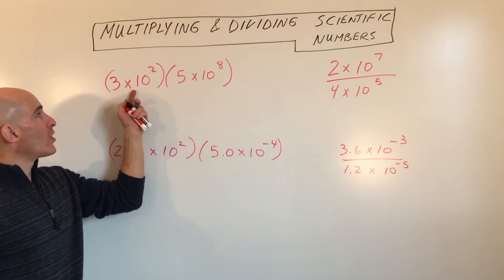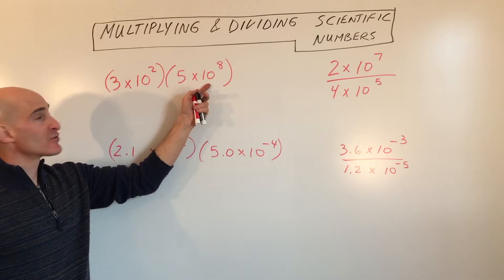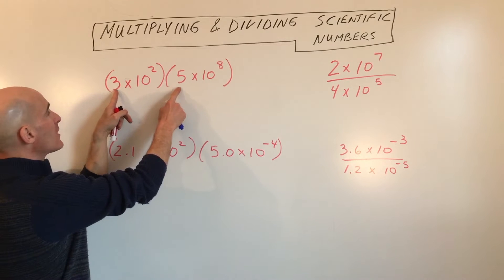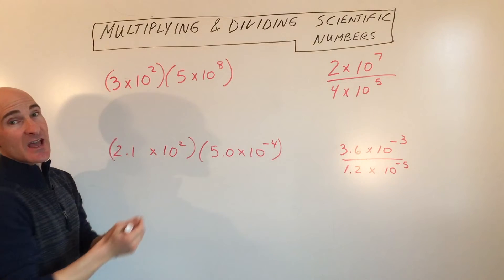So in this first example, we're multiplying two scientific notation numbers together. What you want to do is multiply these quantities together and the powers of 10 together.